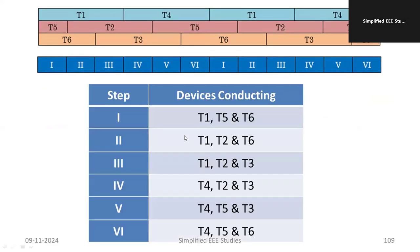The operation pattern is given as follows. For the first step, devices T1, T5, and T6 are conducting. For the second step, T1, T2, and T6 conduct. For the third step, T1, T2, and T3 conduct. Kindly verify with the help of the circuit diagram to understand the concept. Referring to this table, you will know which devices conduct during the positive half cycle and which during the negative half cycle.